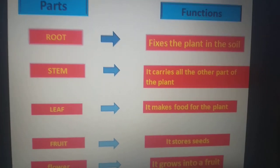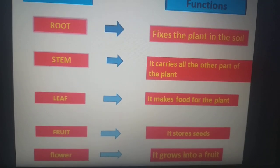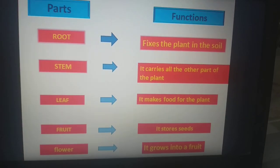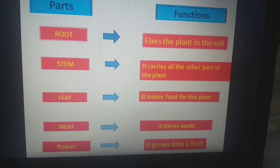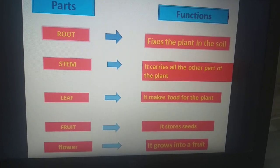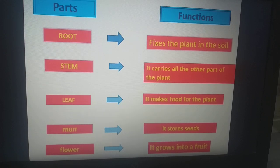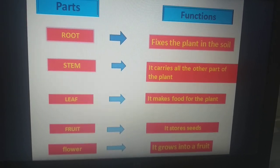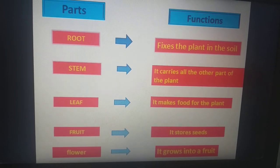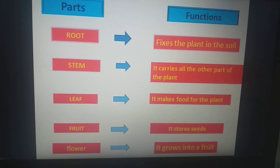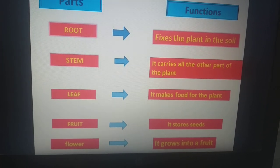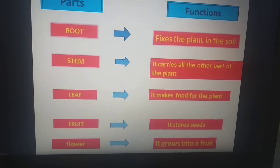Next is leaf. Leaf makes food for the plant. As I have said, that plant is also living beings and they need water and food for their survival. Without water and food, they can die. So who makes food for the plant? Yes, leaf makes food for the plant. So it is called kitchen of the plant.